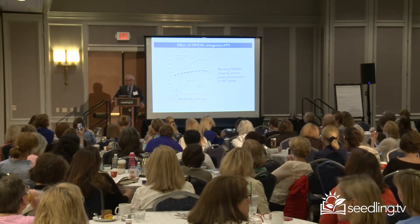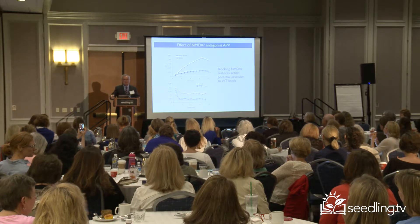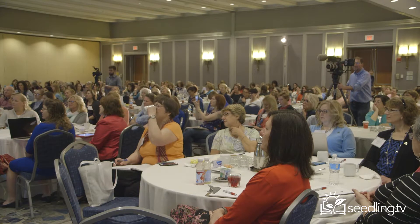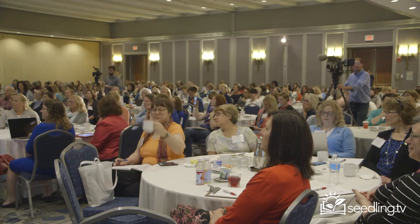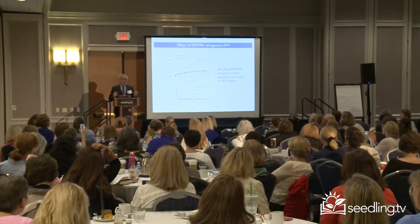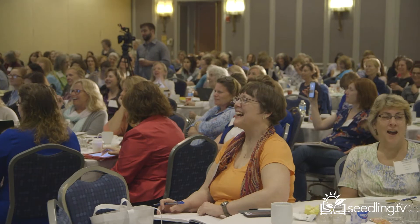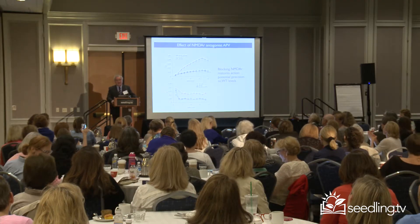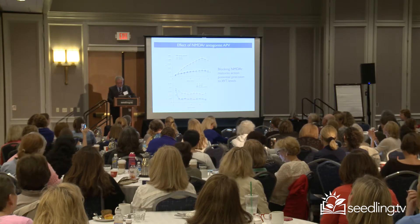Then he stopped improving and went back. So I gave him a second one — atomoxetine, known as Strattera, which is for attention deficit — and he got better again. Now he's on four medications. I don't really know if anything has ever worked or was placebo. So I'm not recommending it. But it's an interesting observation because it fit the laboratory observation. Something to keep in mind.